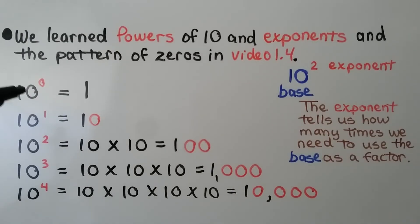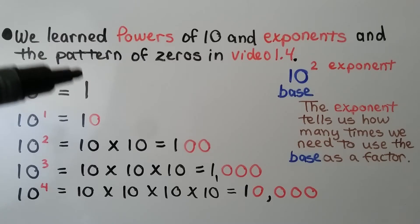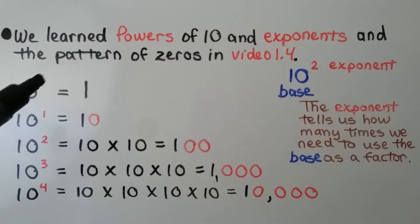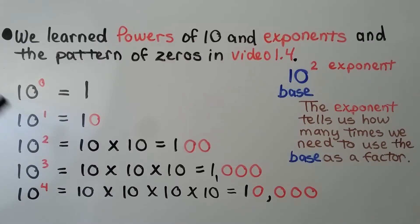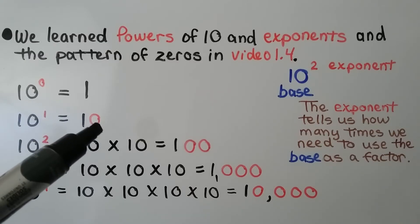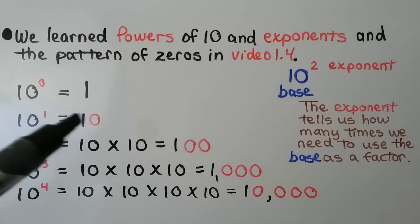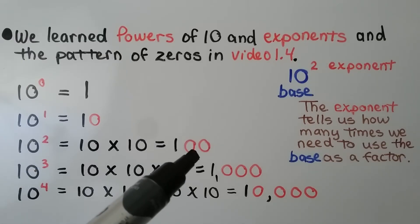We have 10 to the zero power. The exponent is also telling us, if the base is a 10, how many zeros we're going to write next to the number 1. And it's a zero, so we're going to have zero zeros — it's just a 1. For 10 to the first power, we just have a 10 — one zero next to the 1. Here we have 10 to the second power — two zeros next to the number 1, so we have 100.